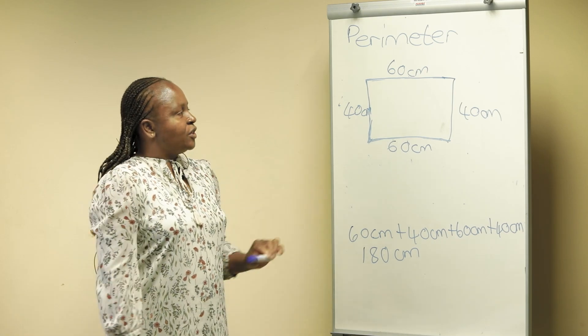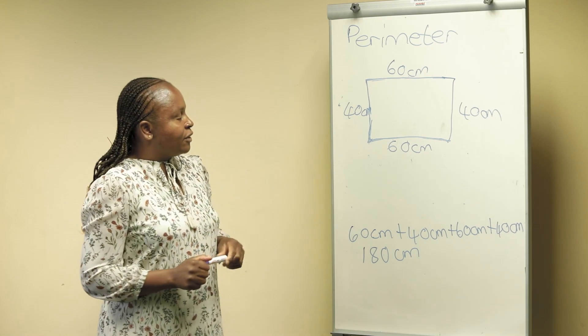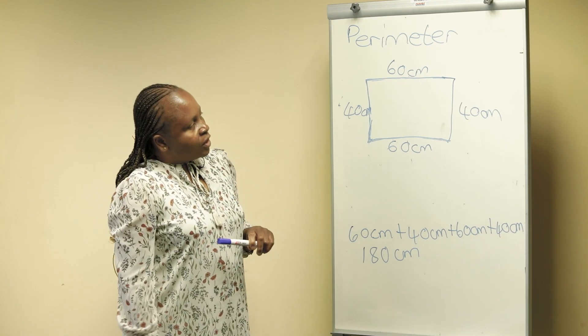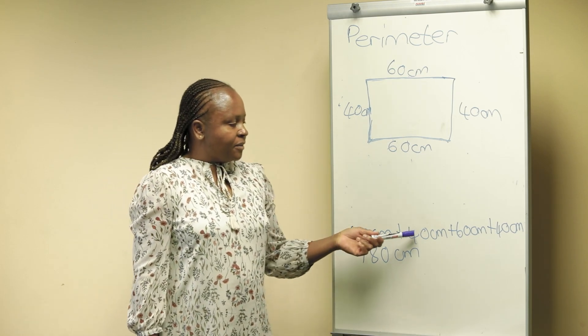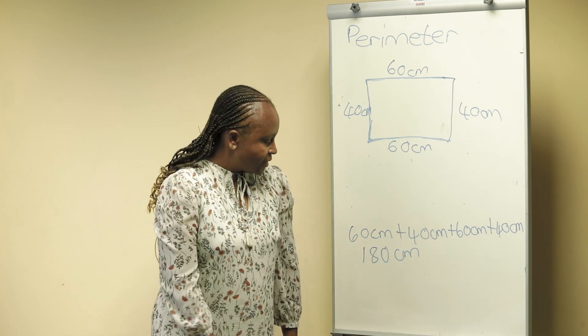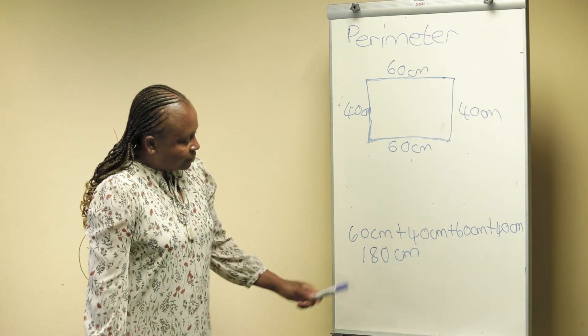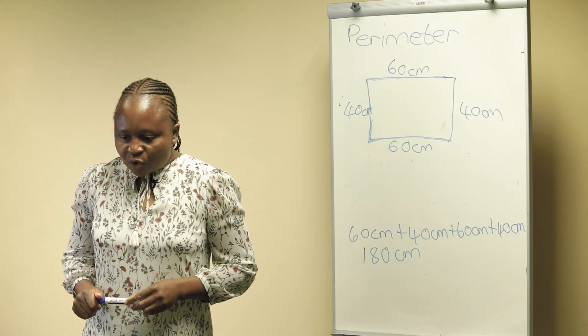The example I have today is adding right round our shape. We have a rectangle here. So when we add, we are saying 60 centimeters plus 40 centimeters plus 60 centimeters plus 40 centimeters, which gives us 180 centimeters.